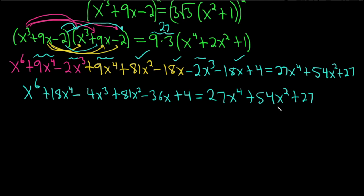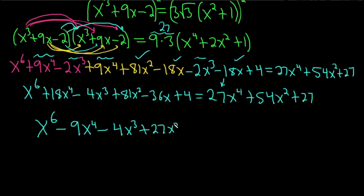Let's subtract all the right-side terms over to the left. We get: x to the 6th, minus 9x to the 4th (from 18 − 27), minus 4x cubed, plus 27x squared (from 81 − 54), minus 36x, and then 4 minus 27 gives minus 23. So this equals 0.